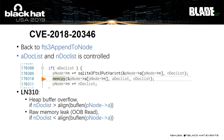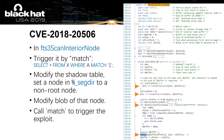Going back to fts3AppendToNode — since we control aDoclist and nDoclist, we can overflow the buffer of pNodeA, or copy raw memory data into it. We can then query the new table to get leaked raw memory. By setting up adjacent tables, we can overflow function pointers of a table very accurately to achieve code execution.